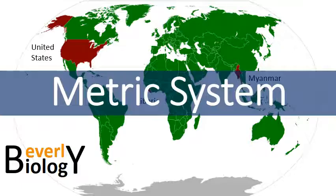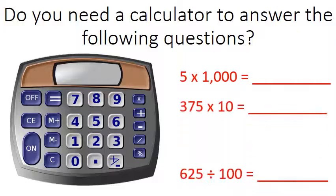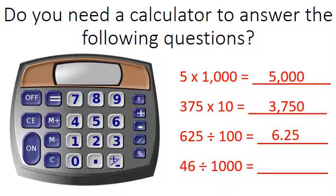This video is going to talk about just what the metric system is. Do you need a calculator to answer the following questions? You shouldn't. Five times one thousand — just put the three zeros after the five. 375 times ten — put that one zero at the end and you get 3,750. 625 divided by 100 — just move the decimal point and you get 6.25. And 0.046 times 1,000 — move the decimal point three places and you get 0.046. If you can do these problems without a calculator, you can do the metric system — it's really this simple.